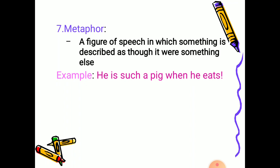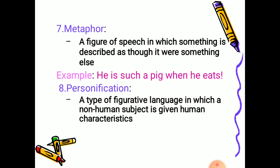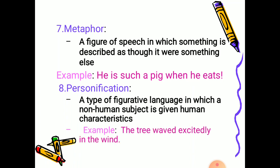For example, 'he is such a pig when he eats.' He is not actually a pig, but his eating habit is just like a pig's. Then personification: a type of figurative language in which a non-human subject is given human characteristics. For example, 'the tree waved excitedly in the wind.' A tree does not have hands to wave, but it was blowing with the air, so it seemed like it was waving.